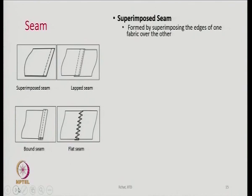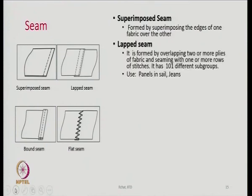Superimposed seam: the edges of one fabric are superimposed over the other — two fabrics are placed side by side, one on top of the other, and then sewn together. That is the superimposed seam — a very simple type of seam. Then comes lap seam, formed by overlapping two or more plies of fabric and seaming with one or more rows of stitches. It has 101 different subgroups and is mostly used in panels, sails, and jeans.